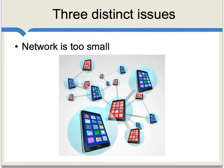There are three distinct issues associated with network externalities. First, there is a potential market failure simply because the network is too small. That is, not enough people are buying phones or using some other common system, simply because they don't necessarily take into account the benefits this produces for other people. This isn't usually a major policy issue because these networks do tend to grow in due time, but it's one simple way of thinking about why network externalities are an important issue.